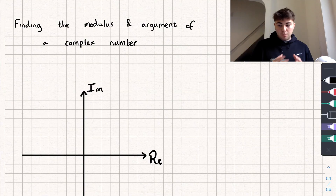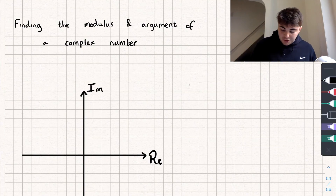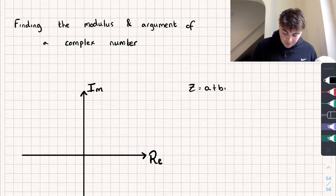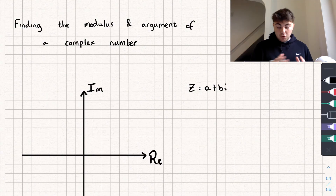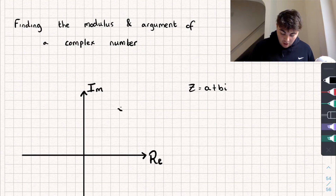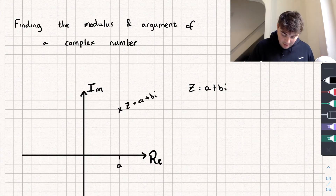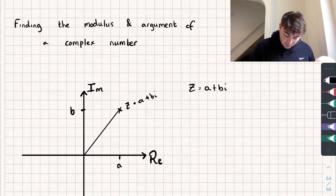So let's see how we can find both the modulus and the argument. Say we have a generic complex number z that is equal to a plus bi. In this example a and b are positive, so we could represent that on our Argand diagram. So z could be equal to a plus bi — this would be a and this would be b, and the vector of this complex number would be something like that.